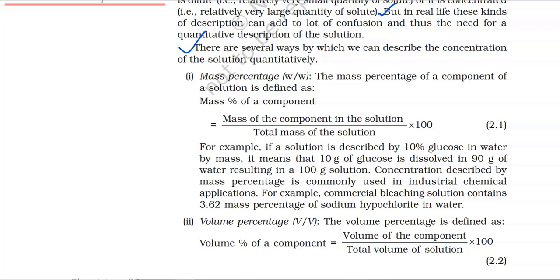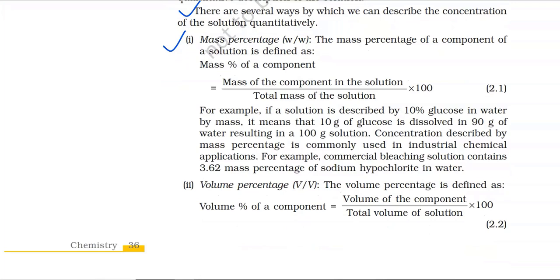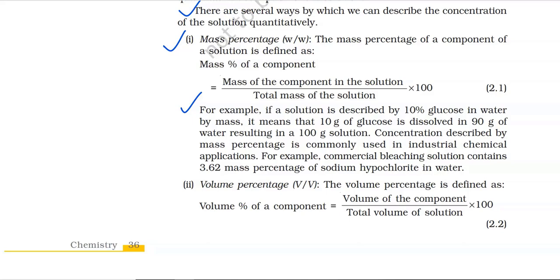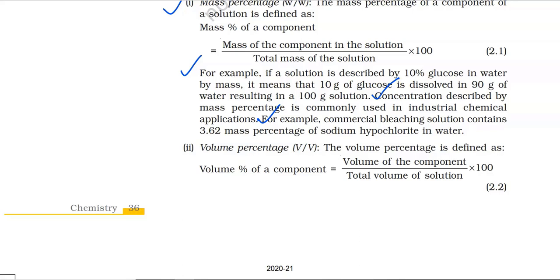Number 1: Mass percentage. The mass percentage of a component of a solution is defined as: mass percentage of a component equals mass of the component in the solution divided by the total mass of the solution, multiplied by 100. For example, if a solution is described as 10% glucose in water by mass, it means 10 grams of glucose is dissolved in 90 grams of water, resulting in a 100-gram solution. Concentration described by mass percentage is commonly used in industrial chemical applications. For example, commercial bleaching solution contains 3.62 mass percentage of sodium hypochlorite in water.